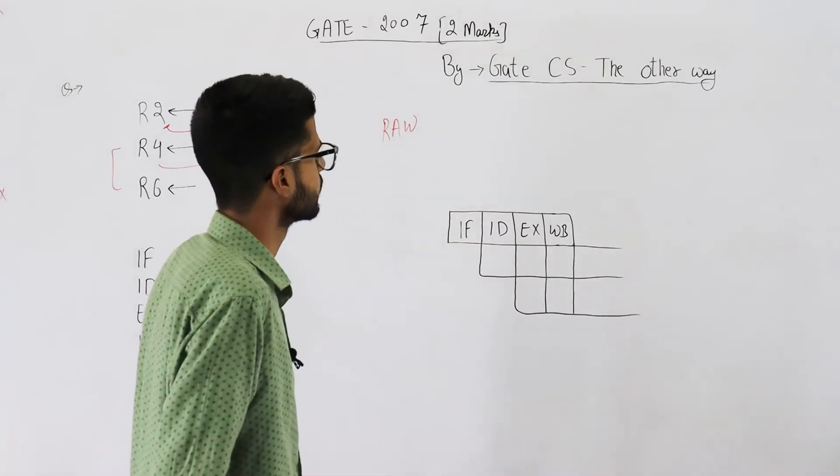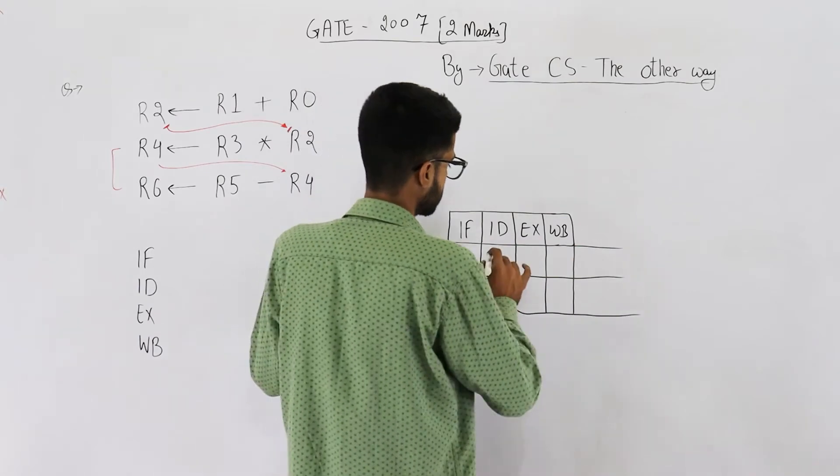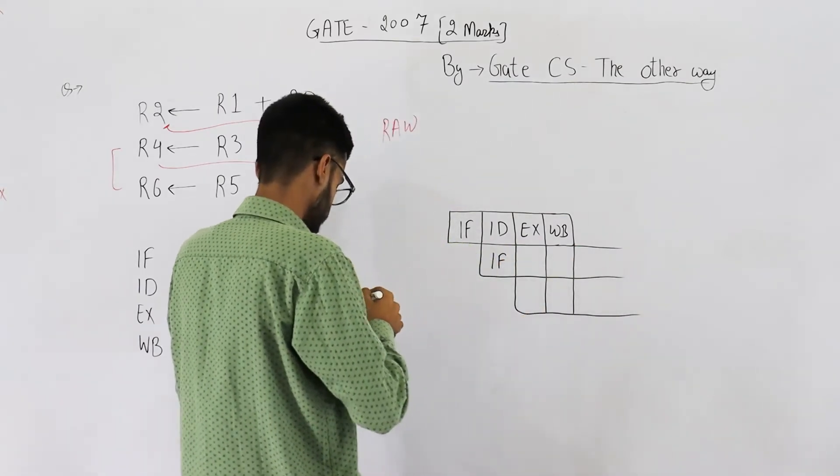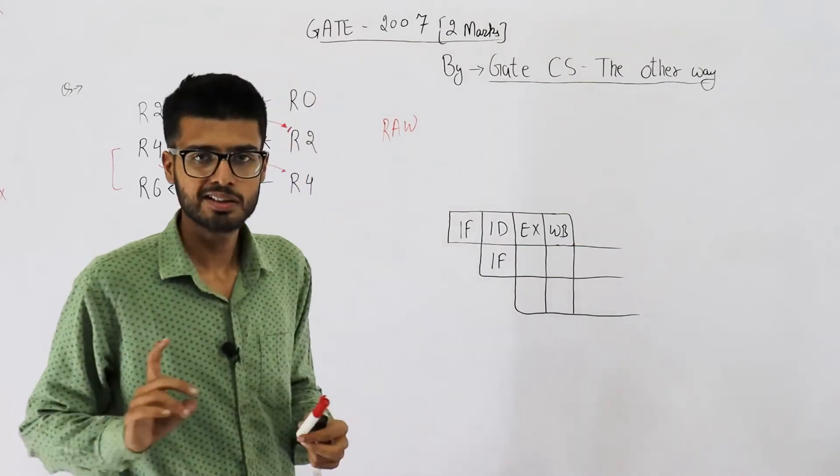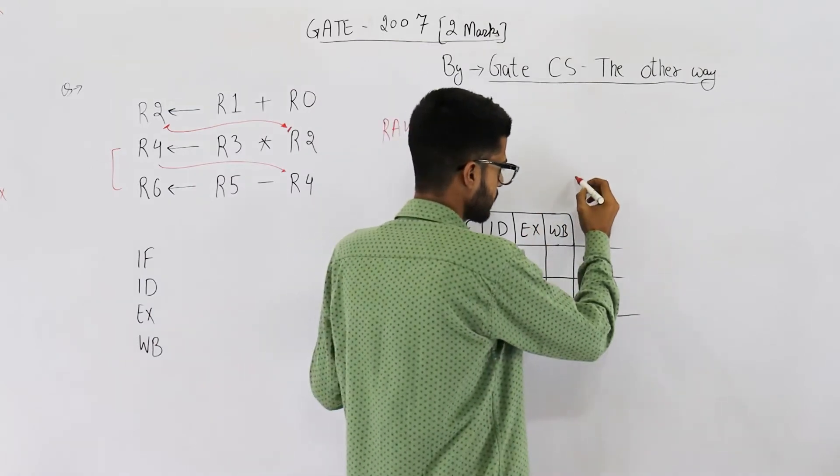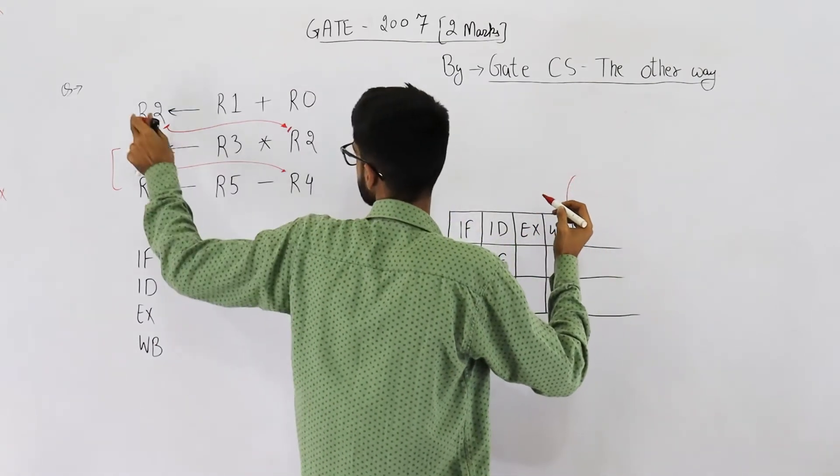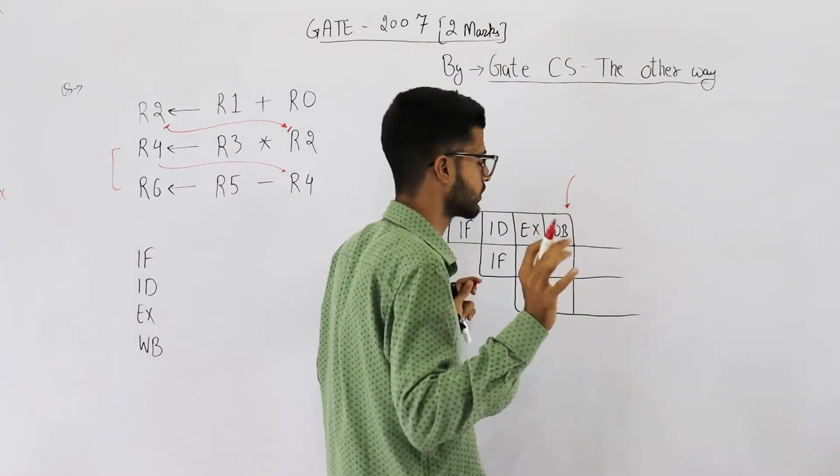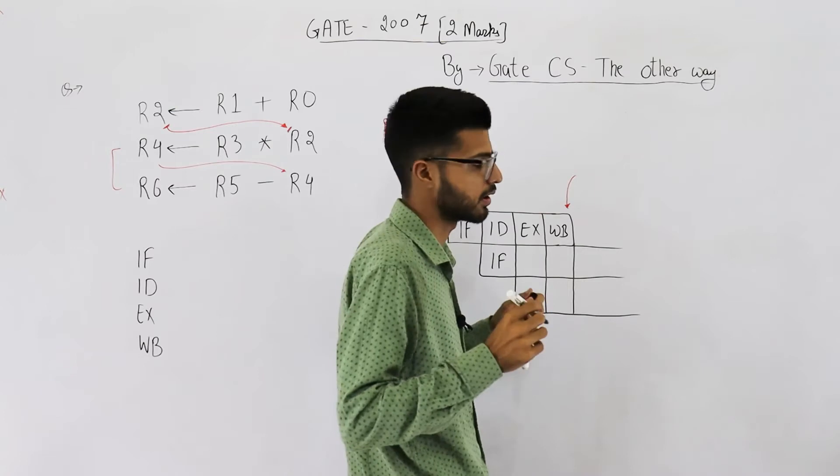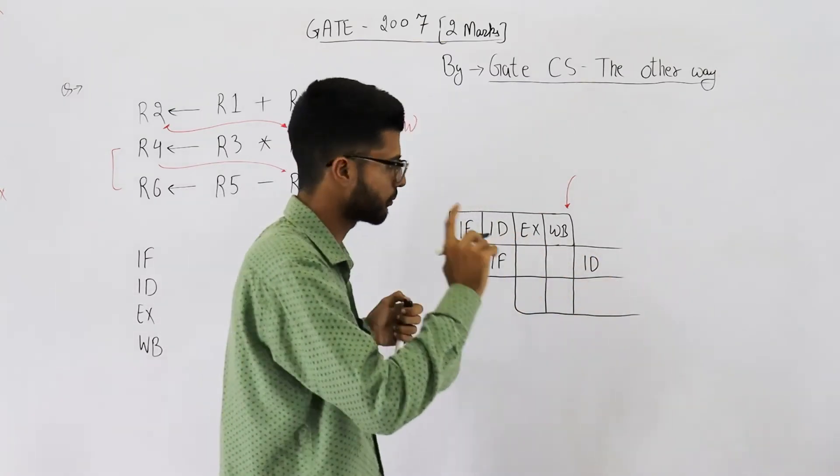We have executed the first instruction completely. Let's now consider the second instruction. Now you see, if we don't consider operand forwarding, then only after this point the correct value of register R2 will be written into the register. That means if you don't consider operand forwarding then ID will have to be placed here.